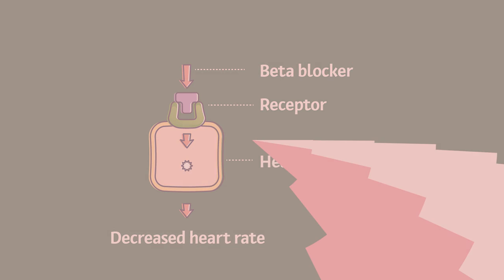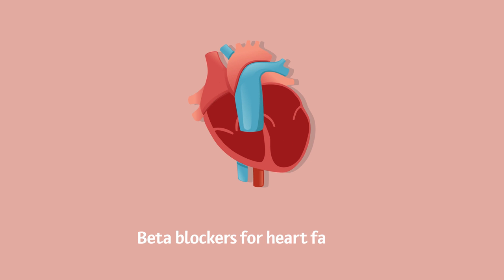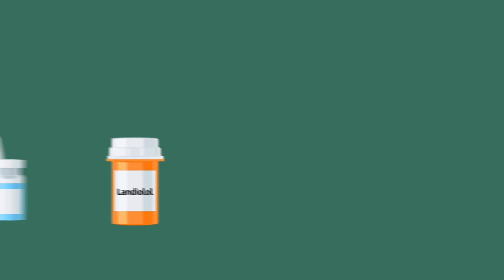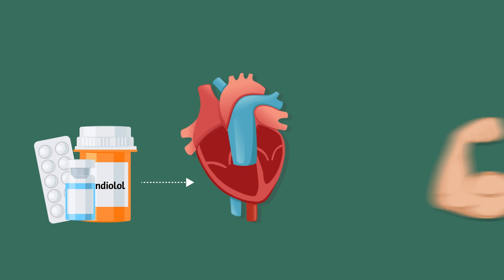There has been concern about using beta blockers for acute heart failure because they can also decrease the strength of the heart's contractions. A drug called landialol is currently the most effective beta blocker used to treat a rapid heart rate called tachycardia in patients with cardiac dysfunction. It is prescribed in combination with other drugs that increase the strength of heart contractions.